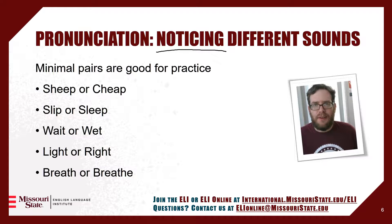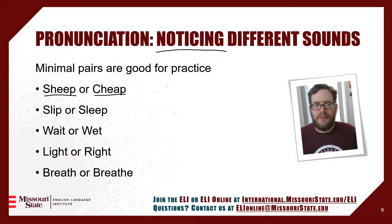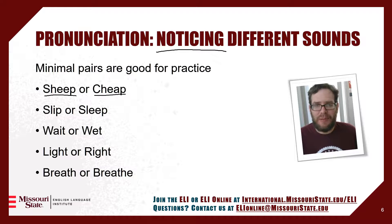Minimal pairs are two words that only have one difference in sound. For example, these two words: sheep and cheap. The first sound — the sh and ch sounds — are different. If you're at home, practice and say it with me: sheep and cheap.